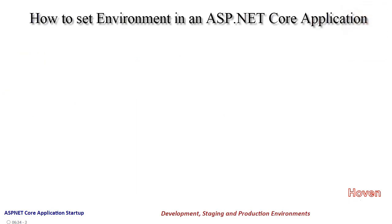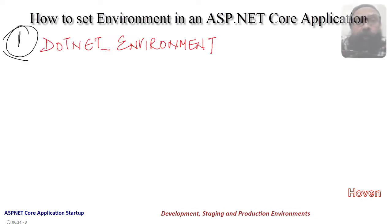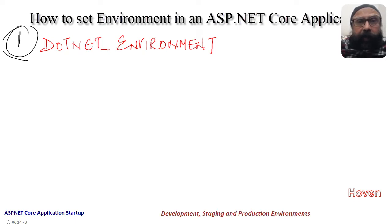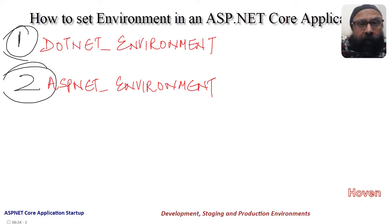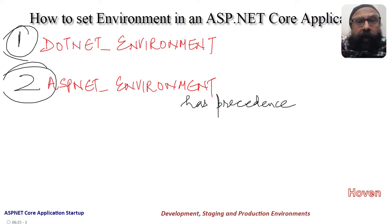Let us now learn how to set the environment in an ASP.NET Core application. There are various methods. The first method is to set an environment variable called DOTNET_ENVIRONMENT on the server machine, and it can be set globally. The second method is to set the environment variable called ASPNETCORE_ENVIRONMENT on the machine, just like we set DOTNET_ENVIRONMENT. It takes precedence over DOTNET_ENVIRONMENT.